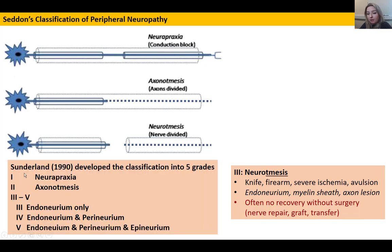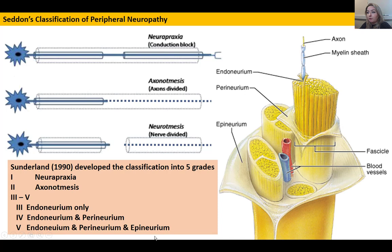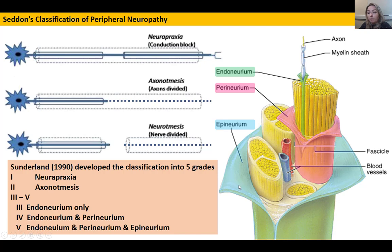Before finishing this section, I want to talk about the other classification system — the Sunderland classification. Both are in use: Seddon's is very useful for functional assessment and clinical diagnostic testing, whereas Sunderland's is more useful from a surgical perspective — when to intervene surgically. In Sunderland's five-grade classification, the first grade aligns with neuropraxia, the second with axonotmesis, and then grades three to five address the level of damage to the endoneurium, perineurium, and epineurium.